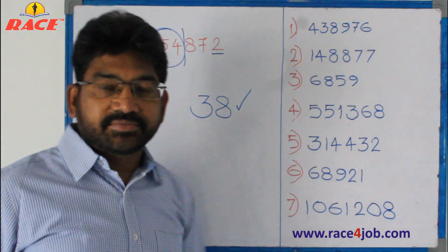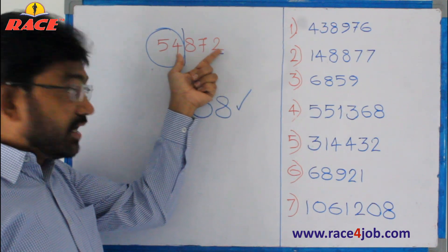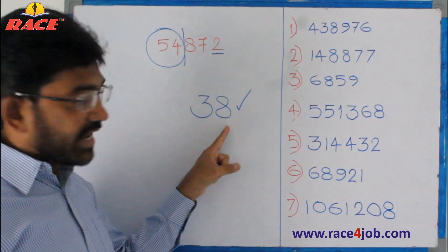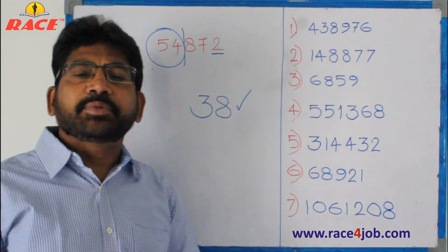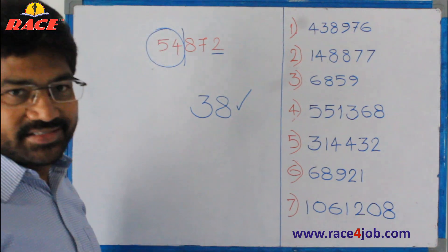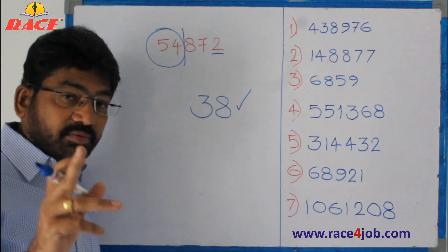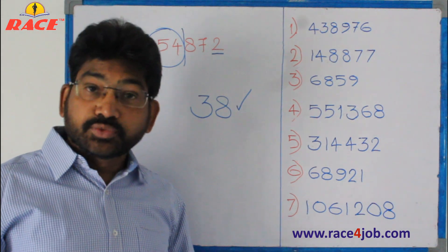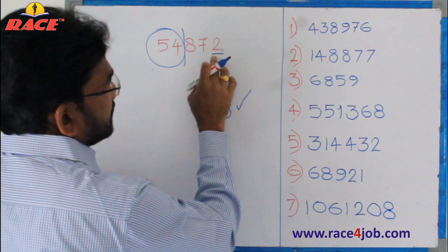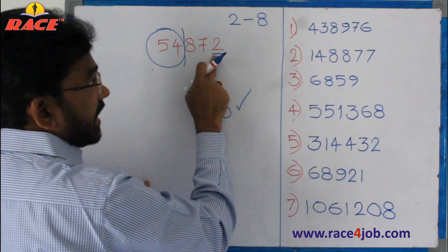Cube root of this number is thirty-eight. To recap: divide the number into two parts such that the right side part has exactly three digits; the left side part may have any number of digits. The right side part is ending with two, so our answer ends with eight. The left side part, fifty-four, is between three cube and four cube; out of these two, you take the smaller one and write it here. This is our answer. To identify the left side part, you should know your cubes — remembering cubes is important. The more cubes you know, the bigger numbers you can handle. Also: if the right side part ends with eight, your answer ends with two.